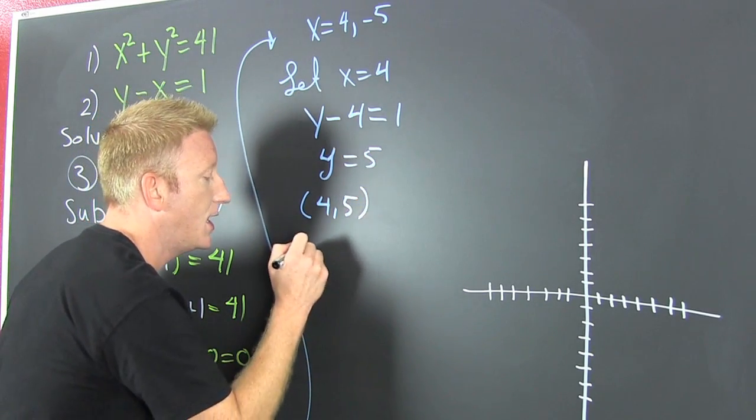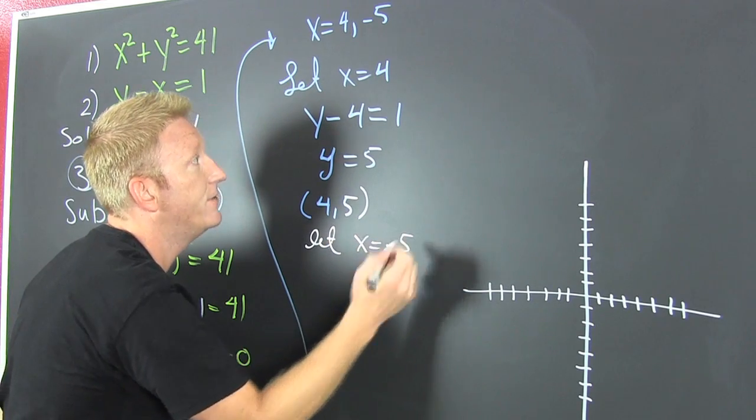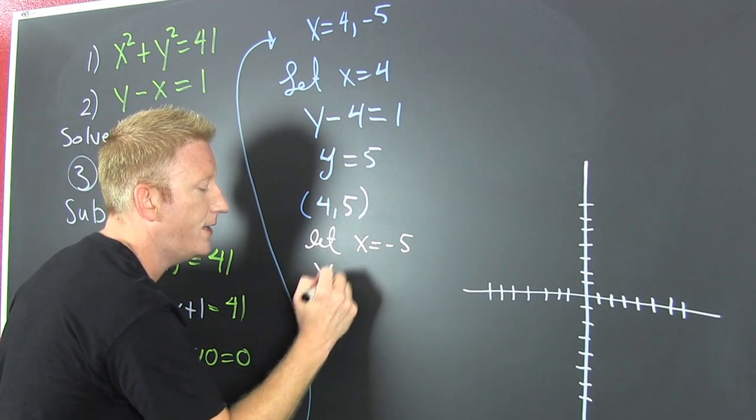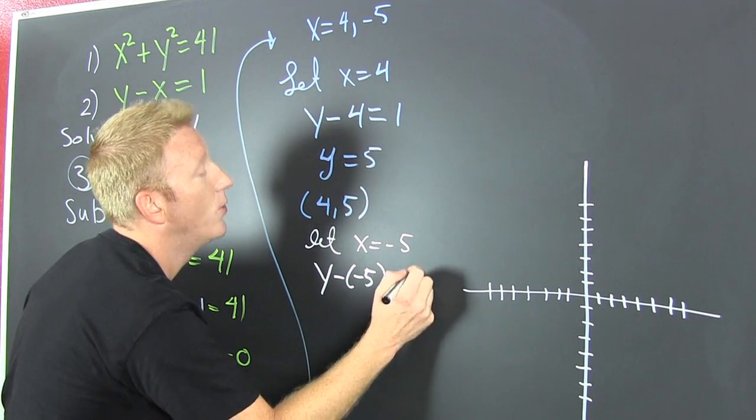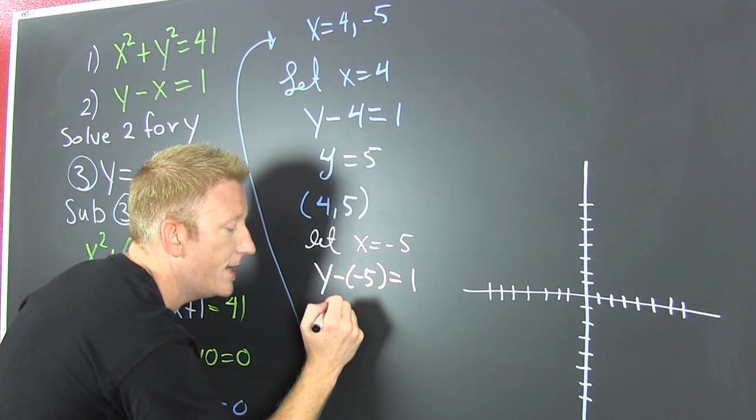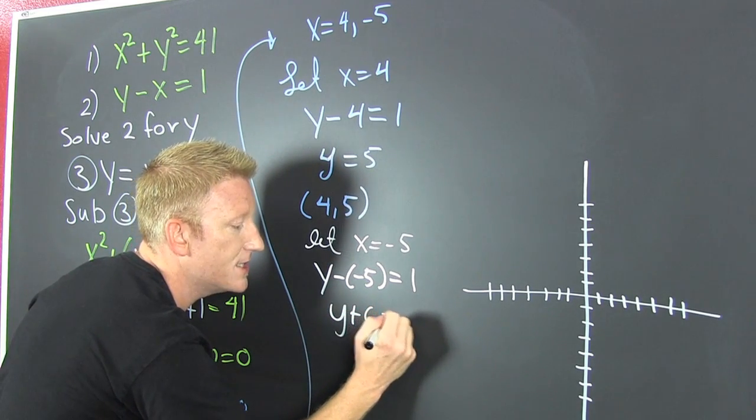Here I'm going to let x equal a minus 5. And when I do, I'm going to have a y minus a minus 5. That's going to be equal to 1.